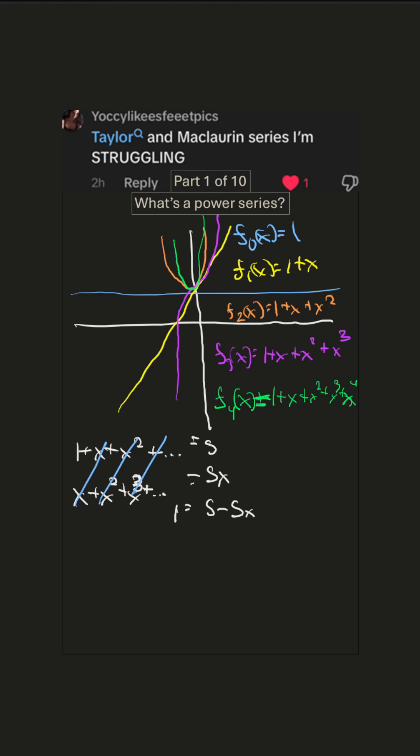And then we can do some algebraic manipulation. Factor out the s. One minus x equals one. And then we can just do s equals one over one minus x.